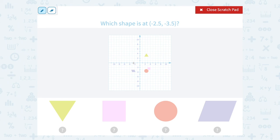And then I'm going to go down 3.5. So I'm going to go down 1, 2, 3, and then halfway between the negative 3 and negative 4 mark. And I land on that purple parallelogram.